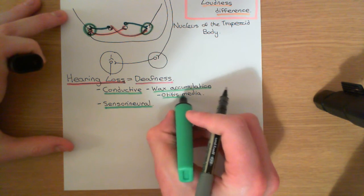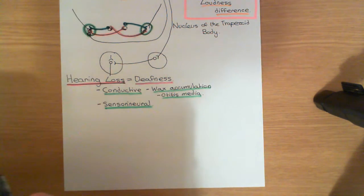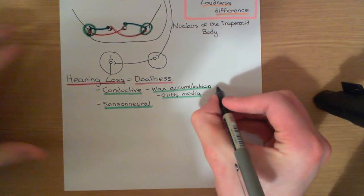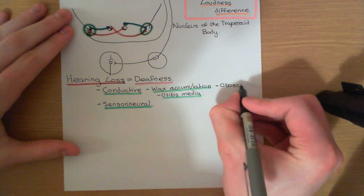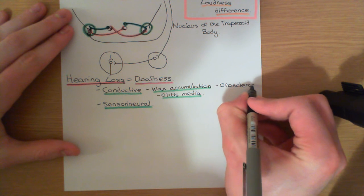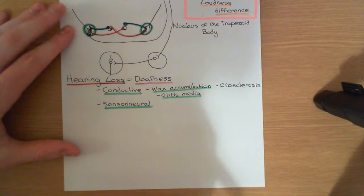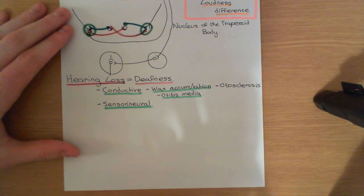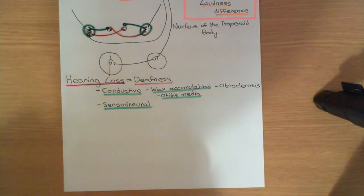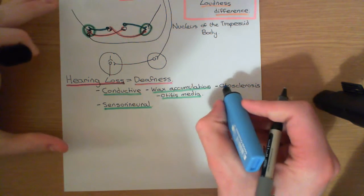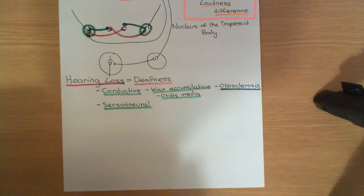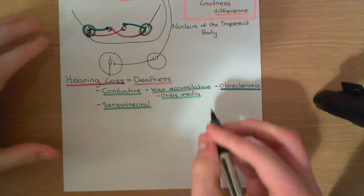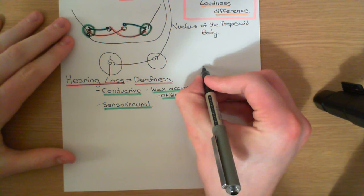The final example I want to mention is something called otosclerosis. In otosclerosis, you get hardening of the annular ligament, which connects the stapes to the oval window. This is something I didn't mention earlier — in order to keep the stapes positioned in the oval window, there is a ligament that runs all the way around it.